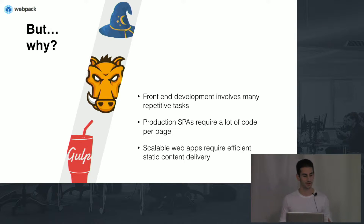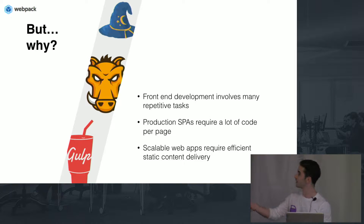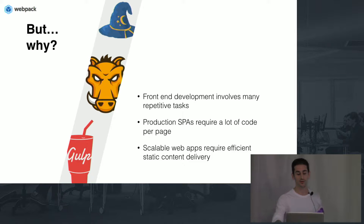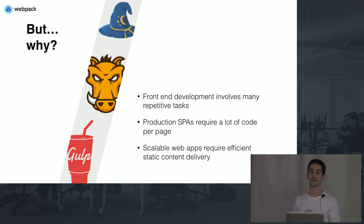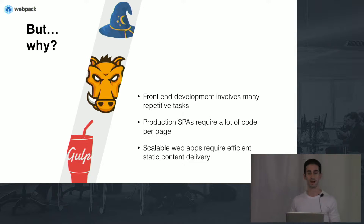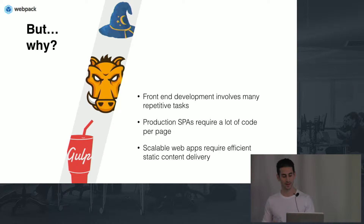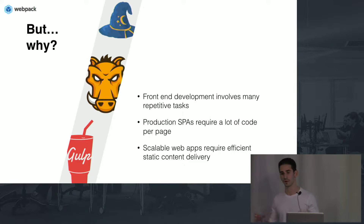So we have these things called task runners. Task runners are systems like Grunt — that cute little warthog in the middle — and Gulp. Those are two of the premier JavaScript task-running systems, and they were built to alleviate that pain. They were built so you could automate these tasks and introduce the concept of a plugin system where you can do all sorts of fun stuff like modification and deduplication. Task runners make our life easier as front-end developers.